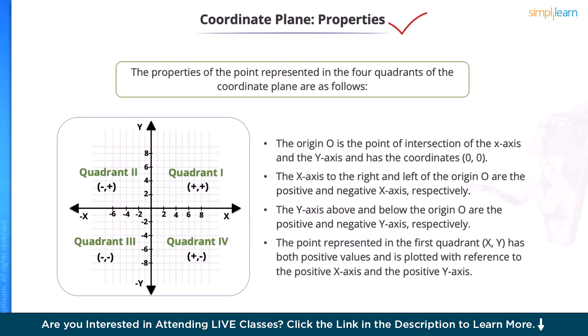Coordinate plane properties. The origin point O is the intersection of the x-axis and the y-axis and has coordinates (0, 0).